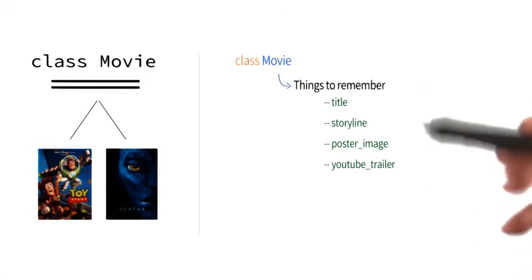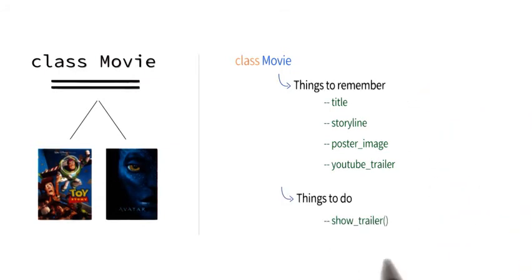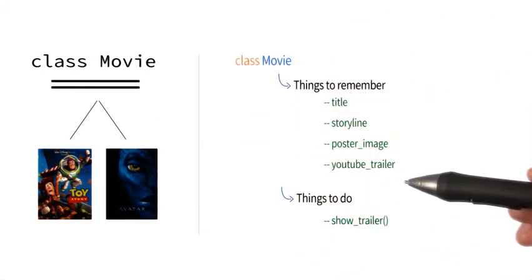And one thing we may want to do with this data is to have a showTrailer function, which opens a movie's YouTube trailer. Okay, let's turn this design into code.